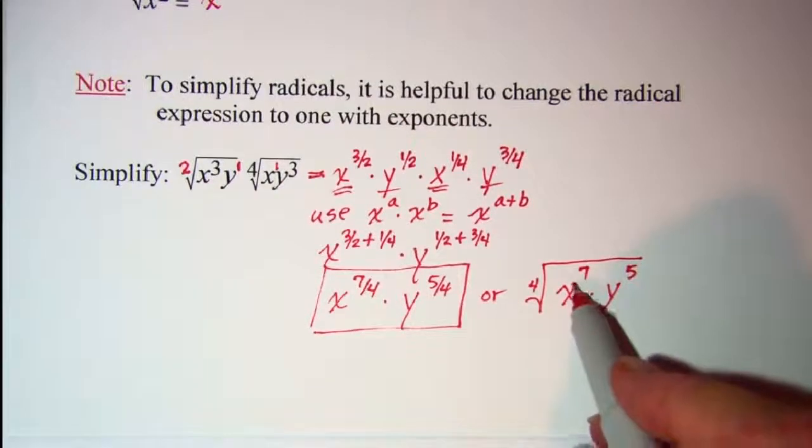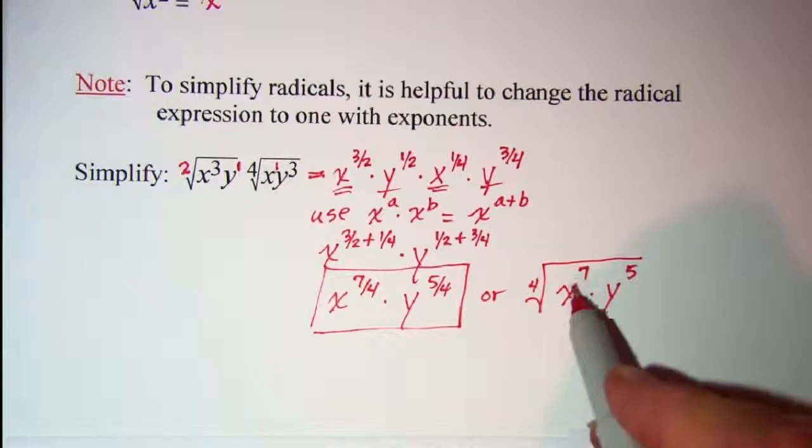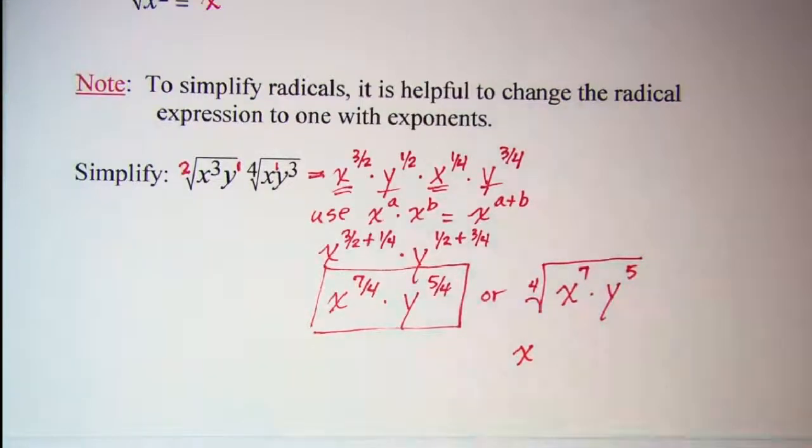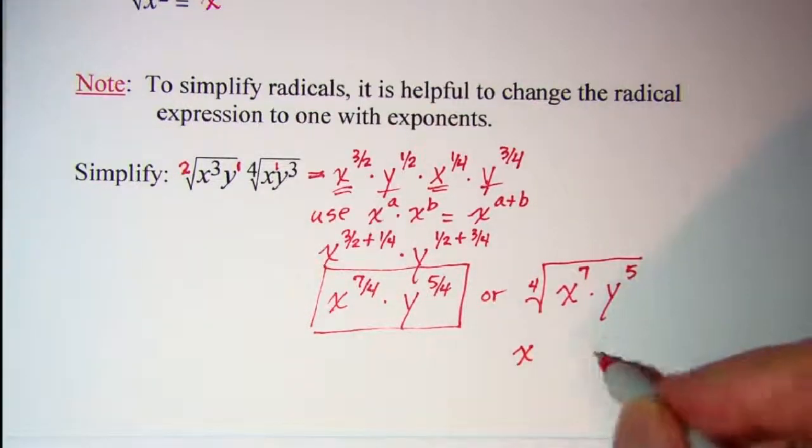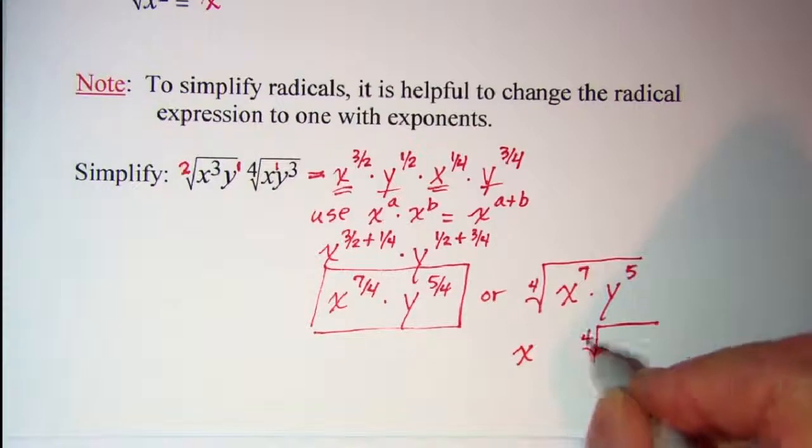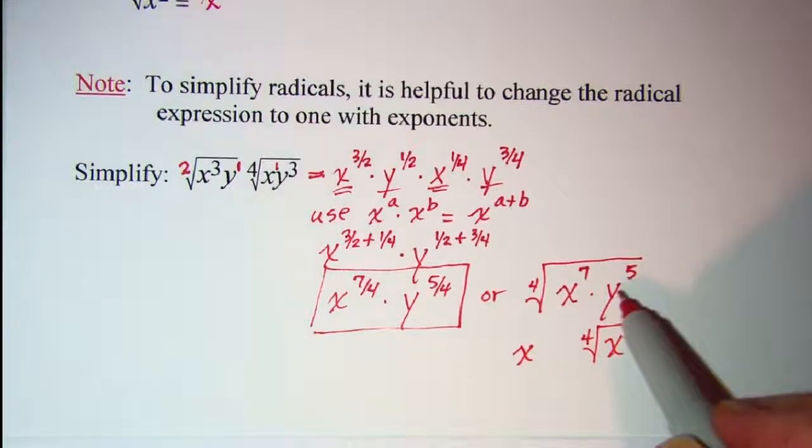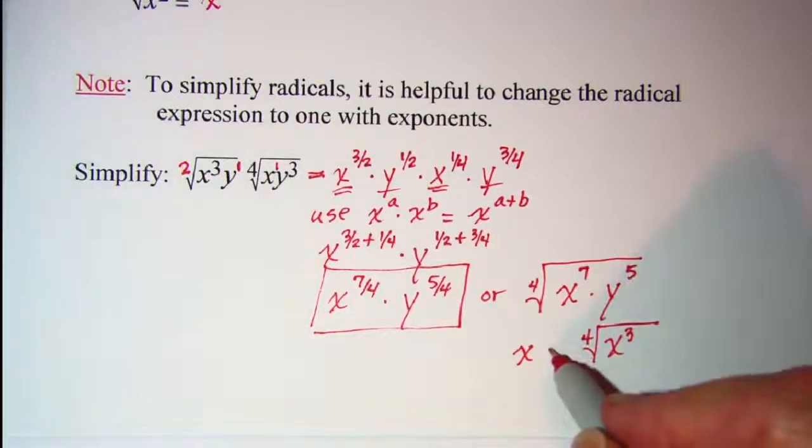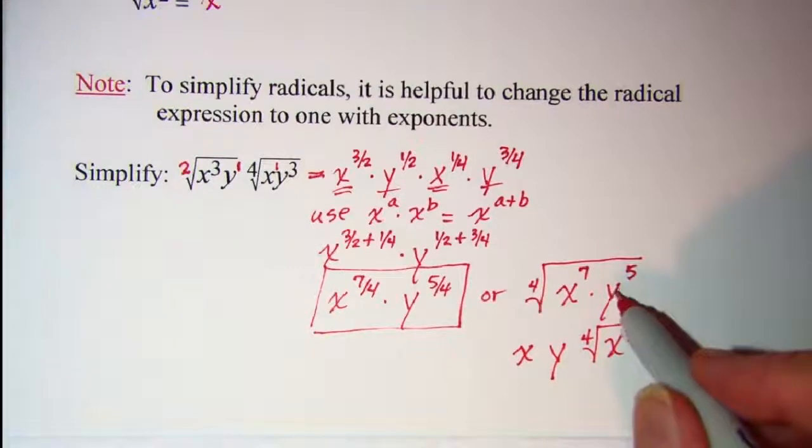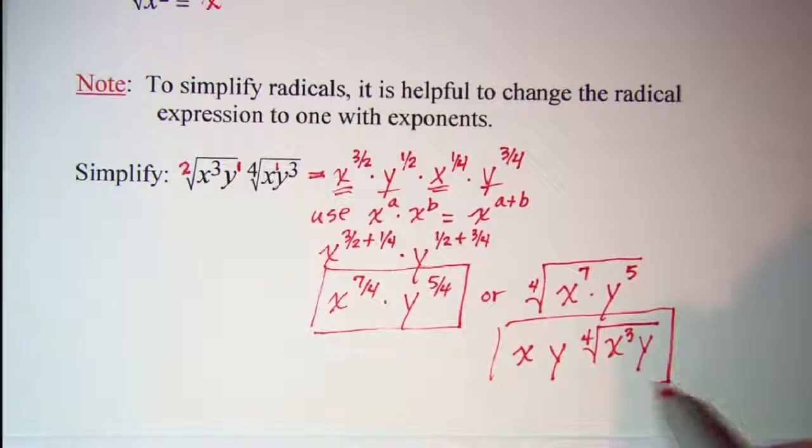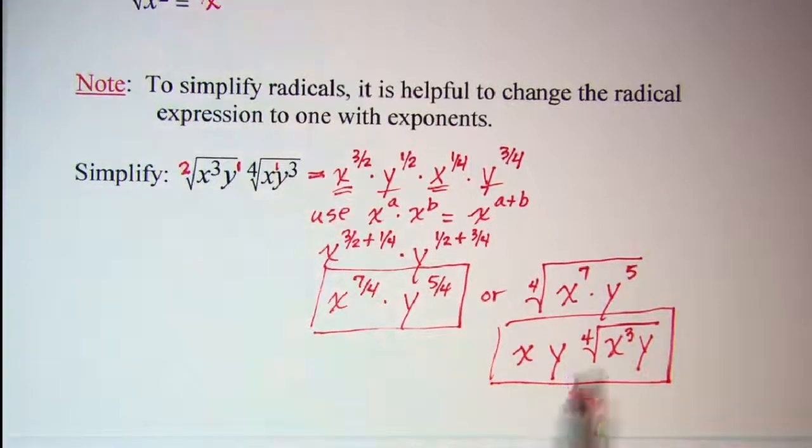Now I could simplify this: x to the 4 fourths is 1 so I could take out an x to the 1st power which would leave x to the 3rd power under the radical, and then y to the 4 fourths is y to the 1. And then I still have a y to the 1st power left under the radical. This is also a simplified expression but in radical form instead of exponential form.